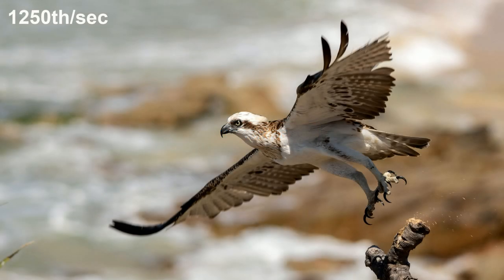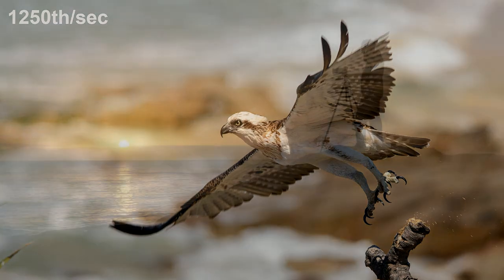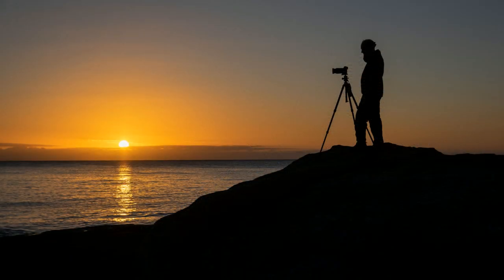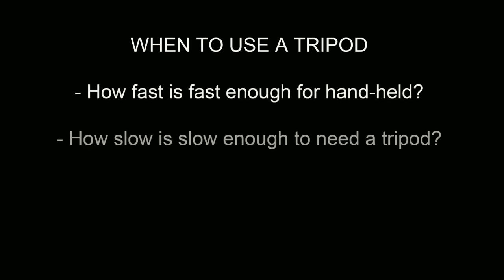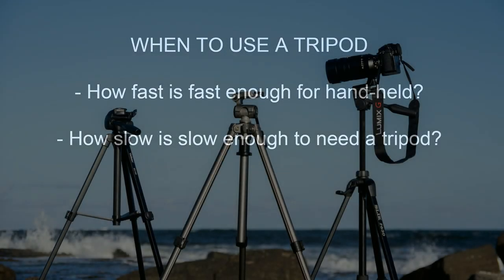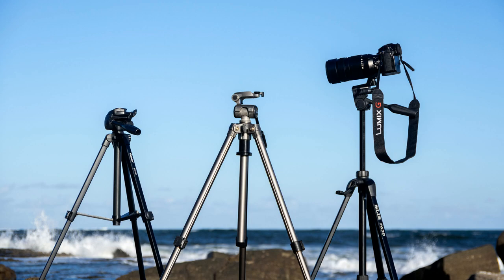My last video in the series was about shutter speed, and in it I touched on how shutter speed affects how we capture moving subjects in a photo. In that video I mostly talked about using a fast shutter speed to eliminate movement, but I also mentioned that when you use a slow shutter speed you might need a tripod to eliminate the blurring caused by a shaky camera. That raises an obvious question: how fast is fast enough to shoot handheld, and how slow is slow enough that you need a tripod? In this video I'm going to take a closer look at when you need your tripod and when you can get by without it.